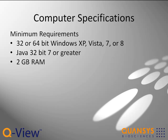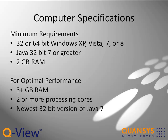The 32-bit version of Java 7.0 or greater must be installed. Two gigabytes of RAM are also required. For optimal performance, your PC should meet or exceed three or more gigabytes of RAM, two or more processing cores, and the newest 32-bit version of Java 7.0 or greater.